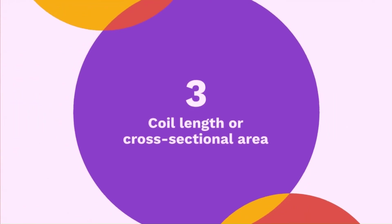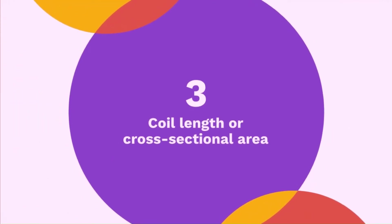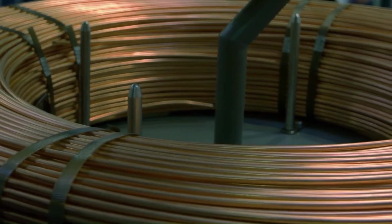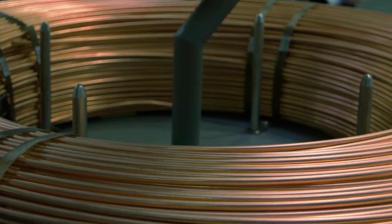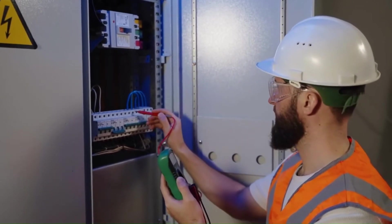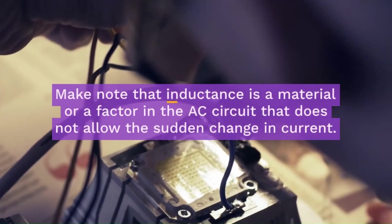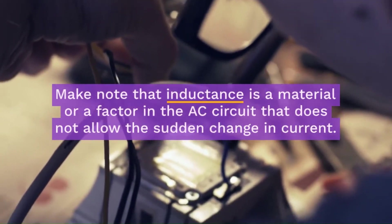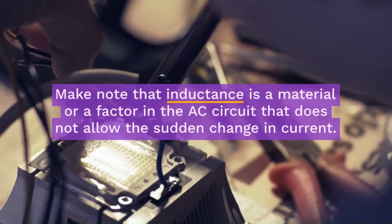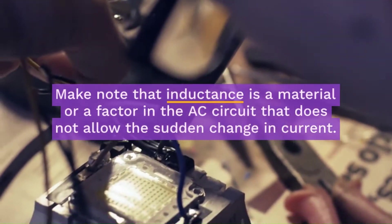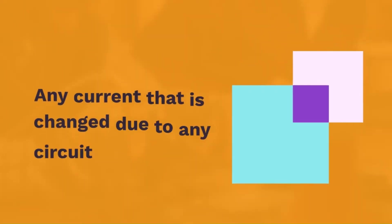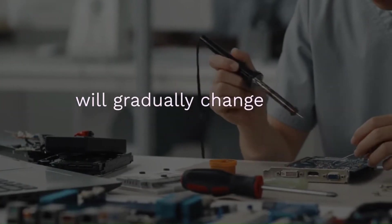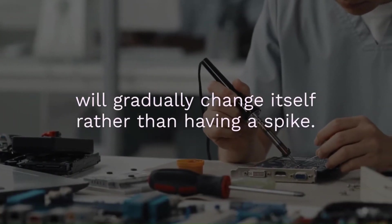Number 3: Coil length or cross sectional area. A longer coil or one with large cross sectional area also increases the inductance. These are the few factors that will increase the inductance. Make note that inductance is a factor in the AC circuit that does not allow the sudden change in current. Any current that is changed due to any circuit condition will gradually change itself rather than having a spike.